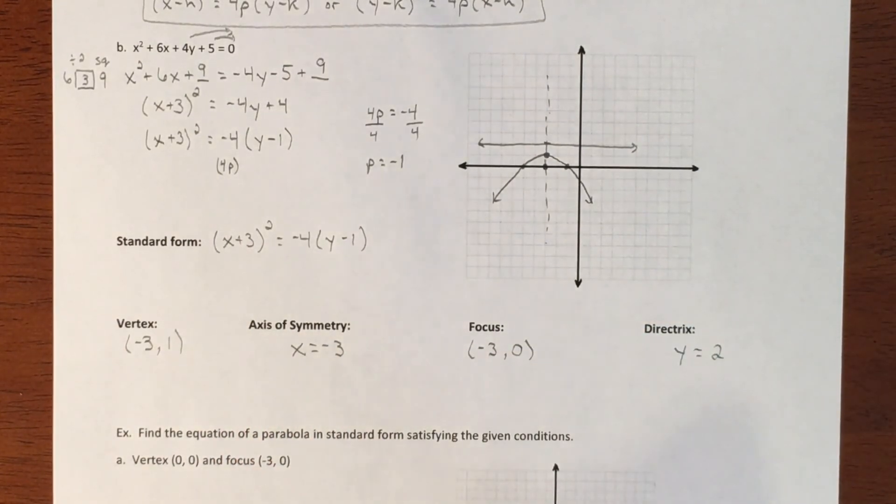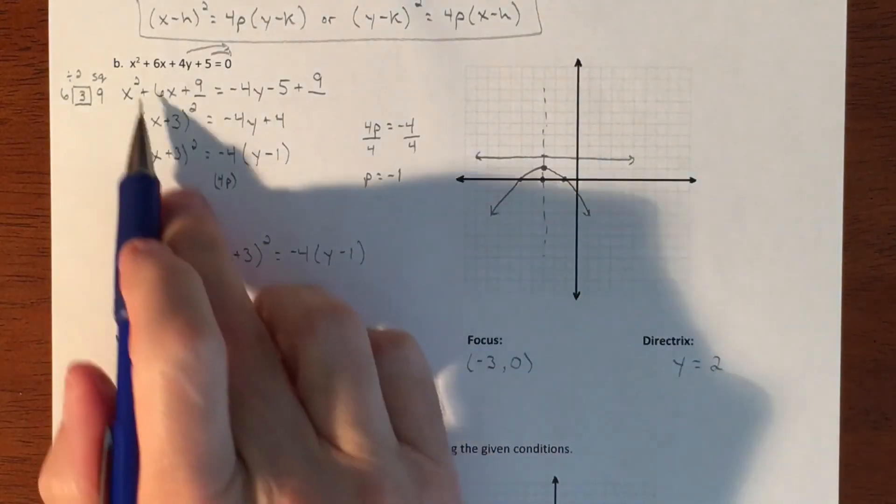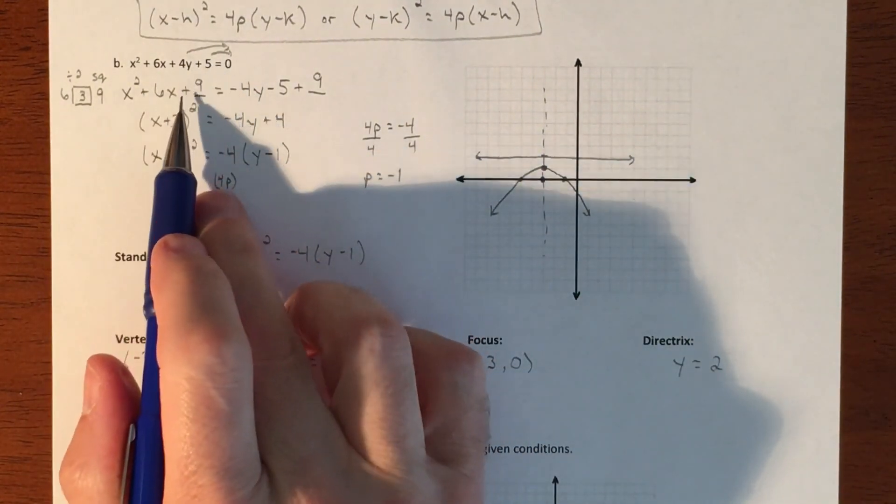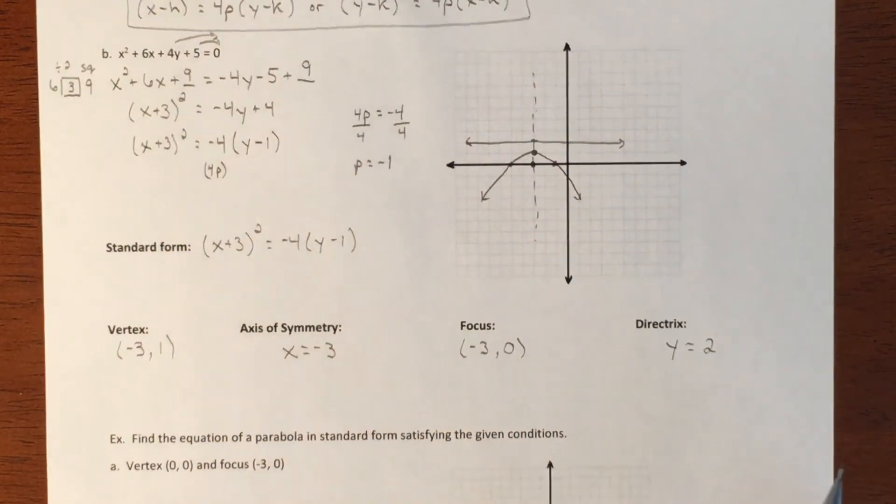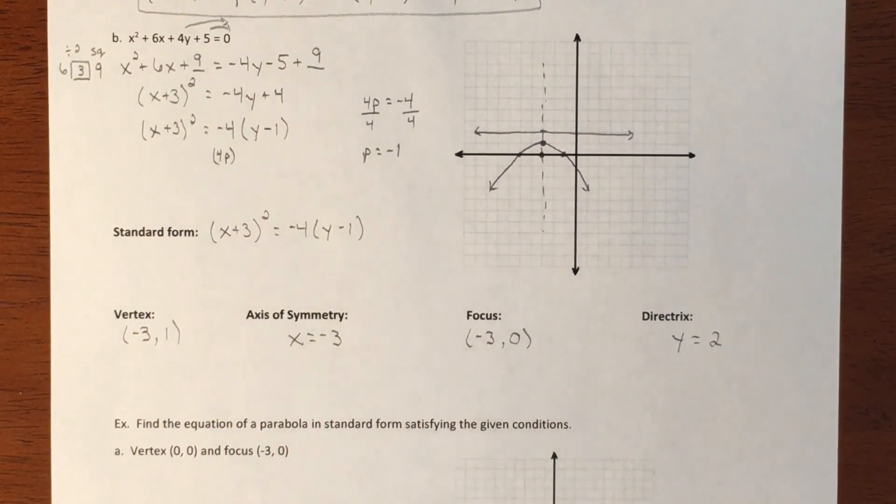Okay. And there is our graph of our parabola that was not in standard form, but we had to manipulate it by completing the square to get it into standard form and then do all the pieces. All right.